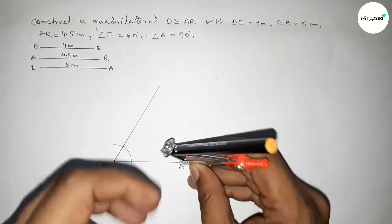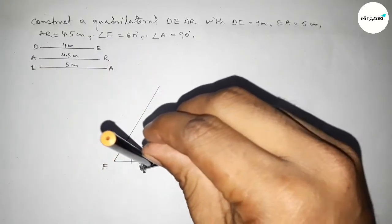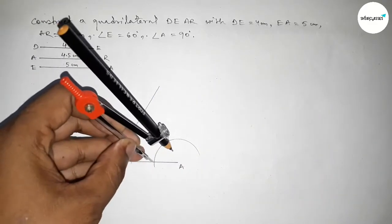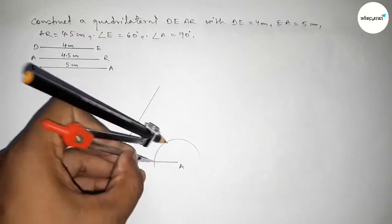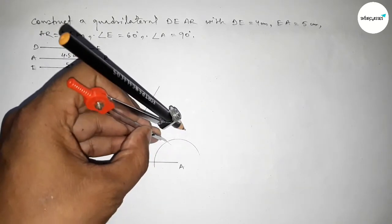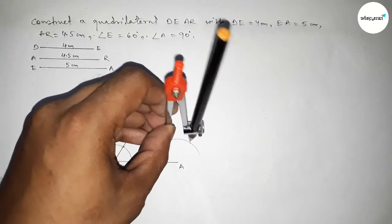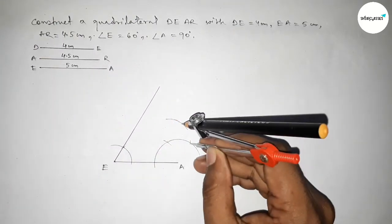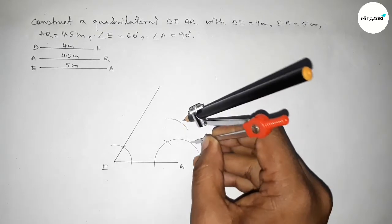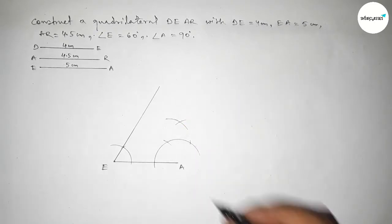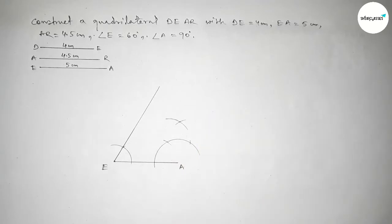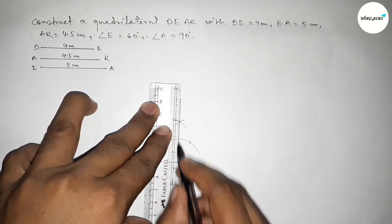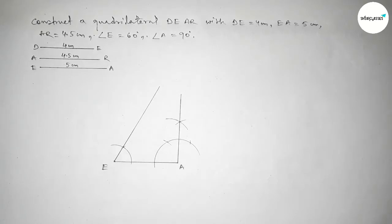Next we have to draw a 90 degree angle on point A. Putting the compass on point A and taking any length, drawing an arc. With the same length, placing the compass and cutting at multiple points. Drawing another arc and cutting again so both curves intersect at a point. Joining this side to get the 90 degree angle.